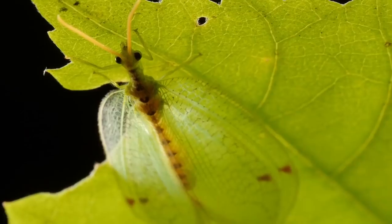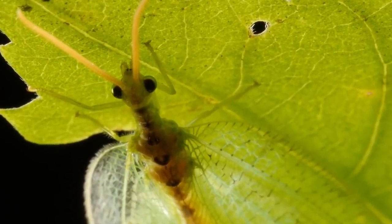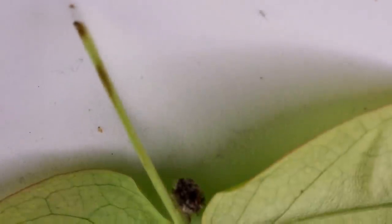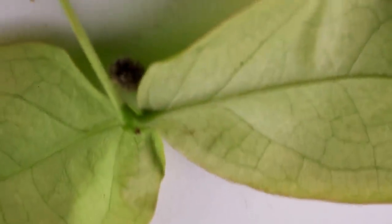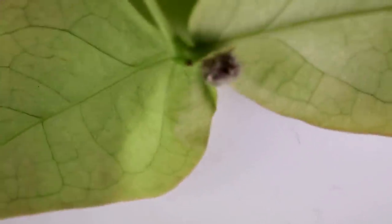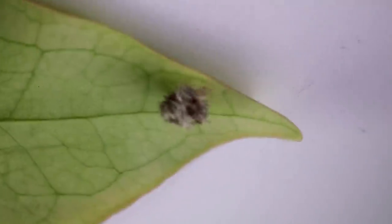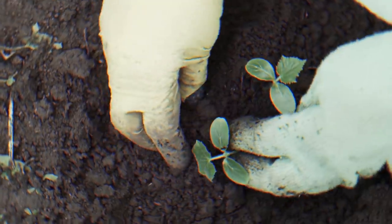Green Lacewing. Green lacewings are a type of flying insect famous for being excellent biological control for common garden pests. Adult females lay their eggs on top of leaves, in batches of as many as 200, by attaching them to a half-inch tall, hair-like filament one by one. This hopefully protects them from being cannibalized by their larvae siblings.